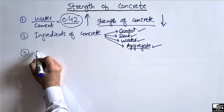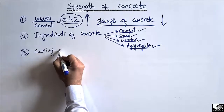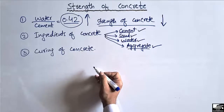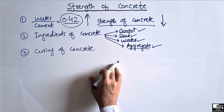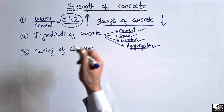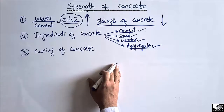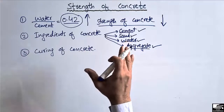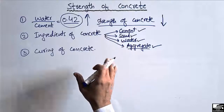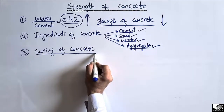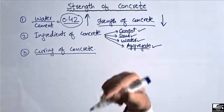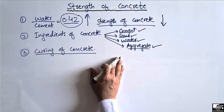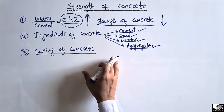The third factor that affects the strength of concrete is the curing of concrete. Curing of concrete means that when we place the concrete on site, after one or two days we put water on the surface of the concrete to maintain the desired amount of moisture and achieve maximum hydration. Curing prevents plastic shrinkage inside the concrete and is really important for achieving higher strength.